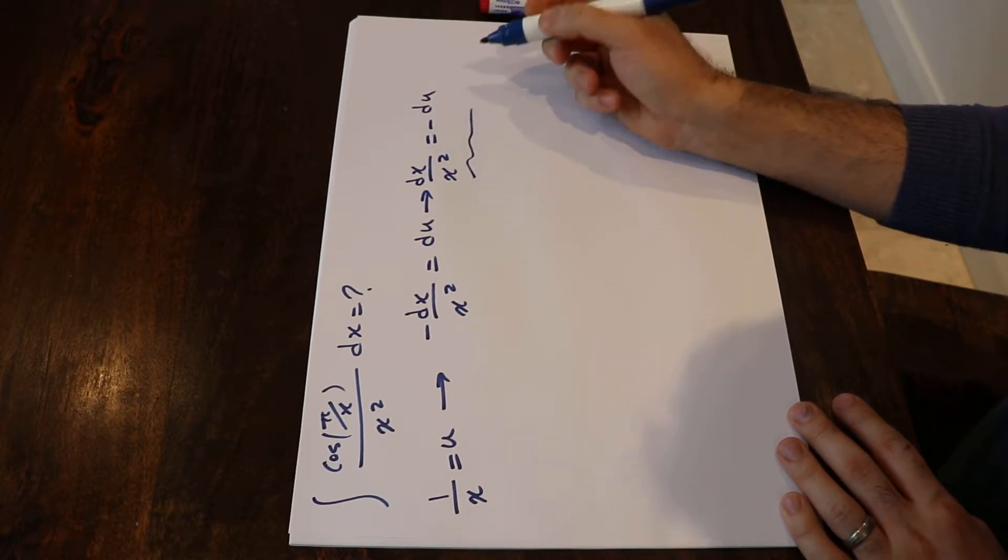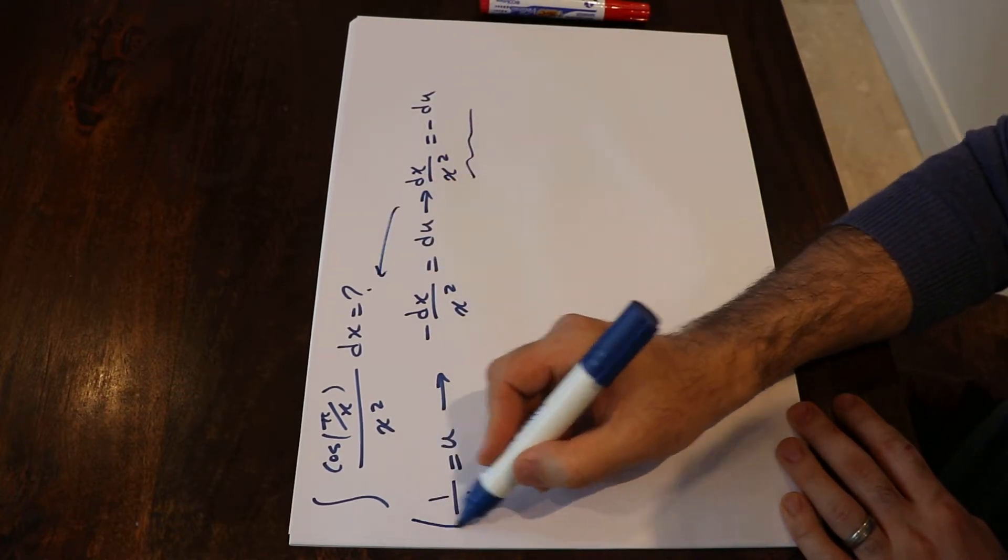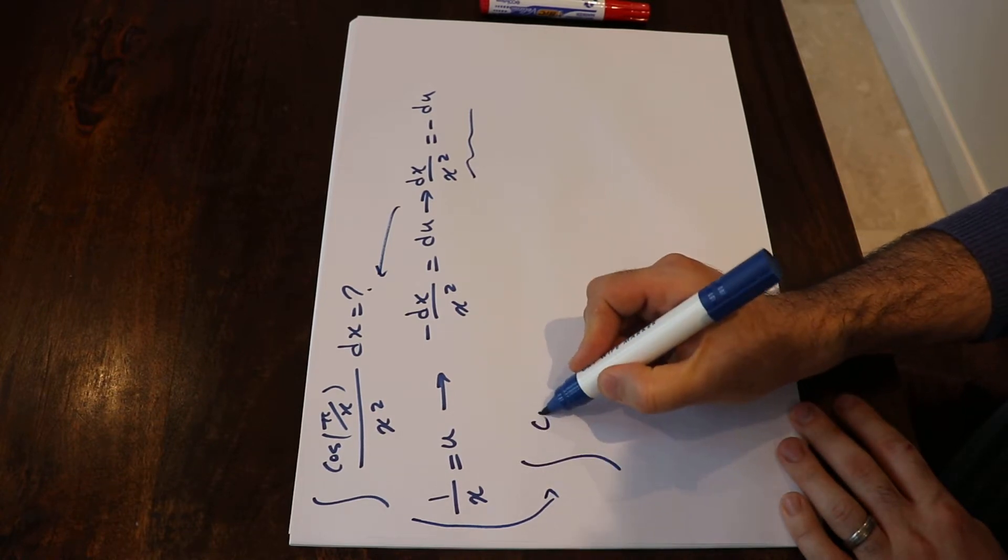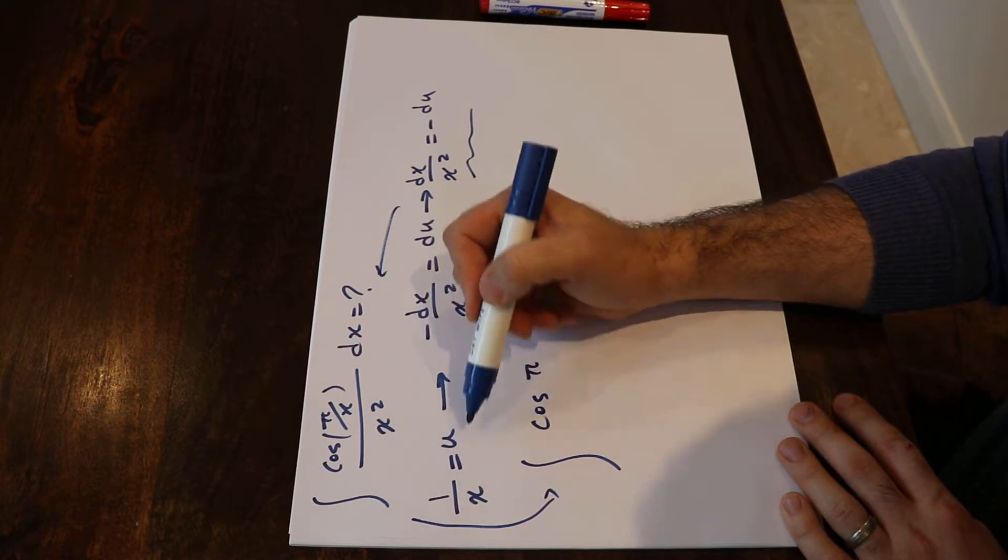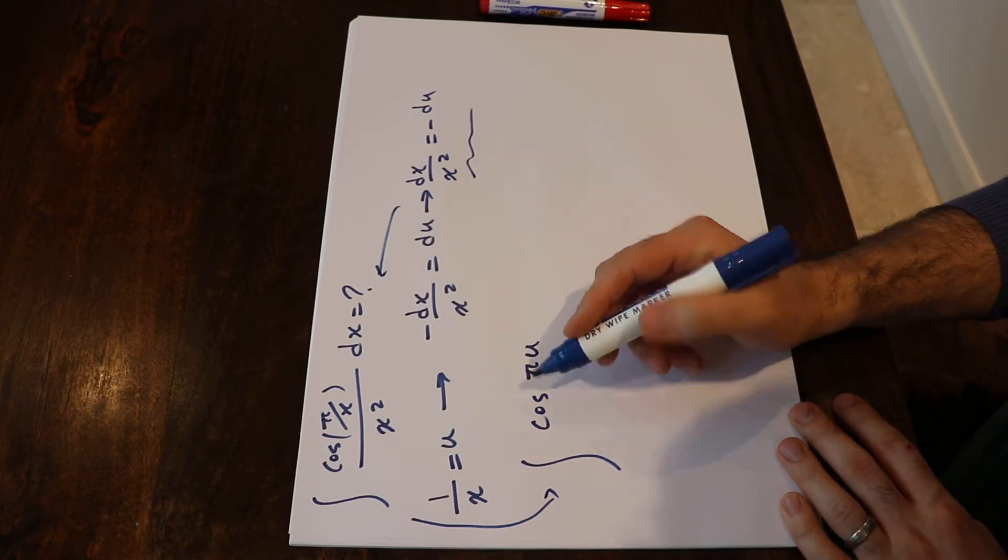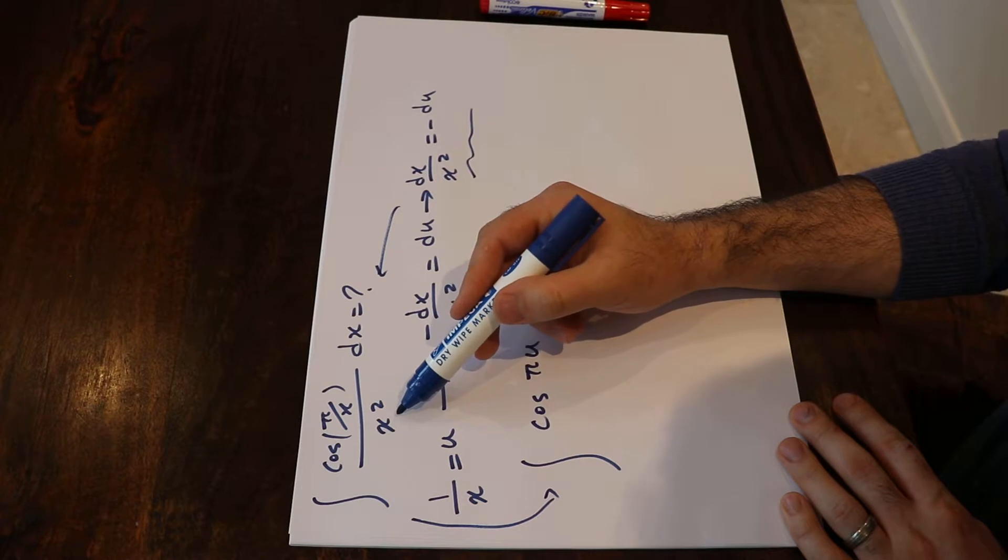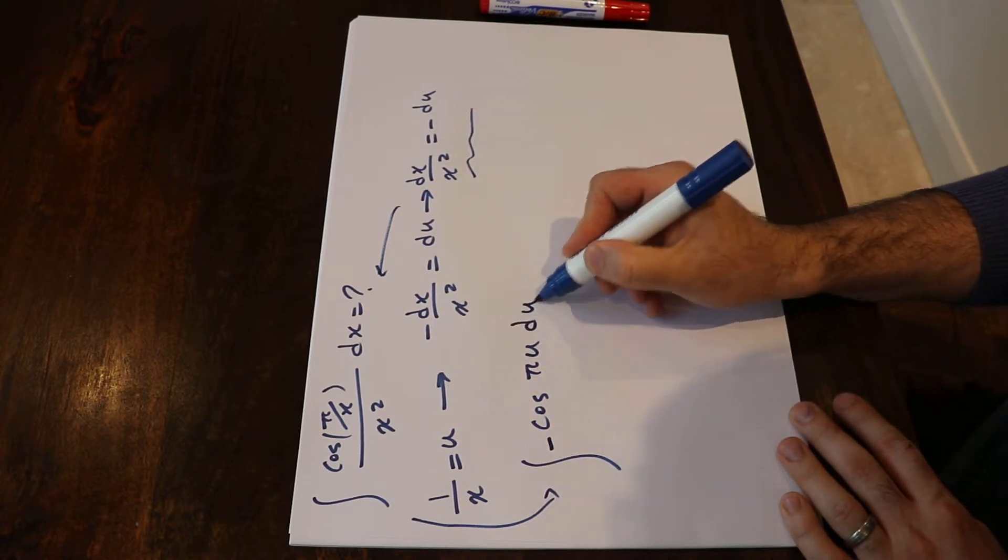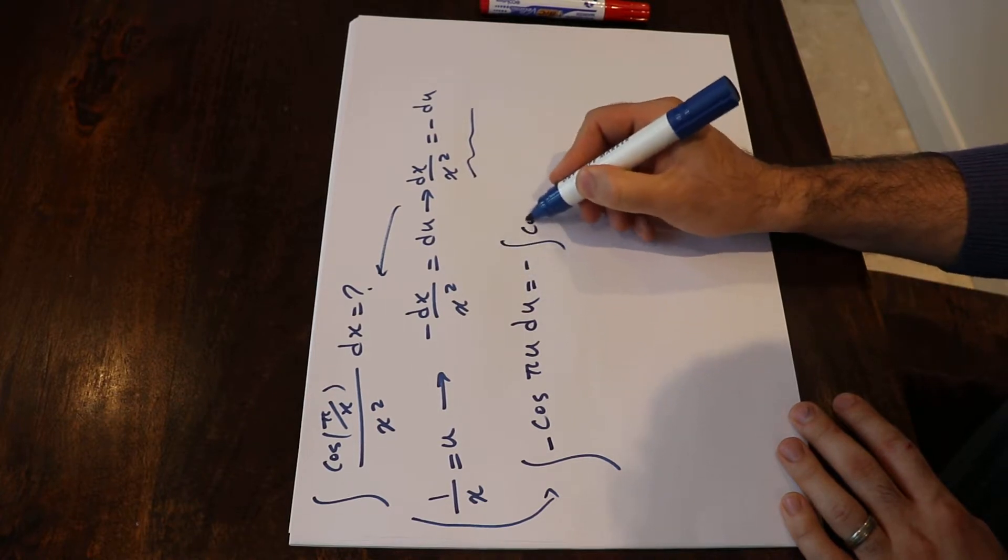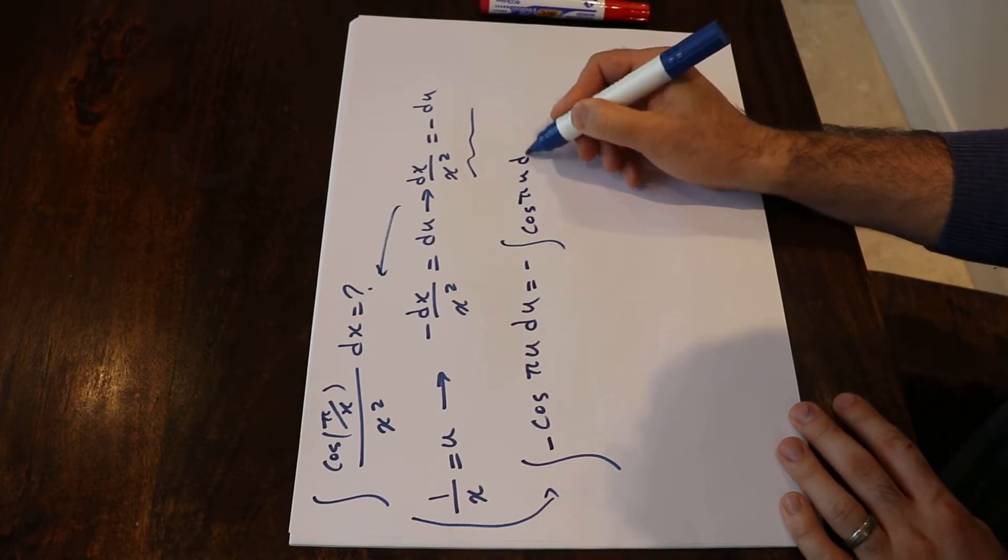So now if you substitute this into this integral and rewrite it, you will get cosine π. Instead of 1 divided by x I use u here, and instead of dx over x² I use minus du, which will be equal to minus integral cosine πu du.